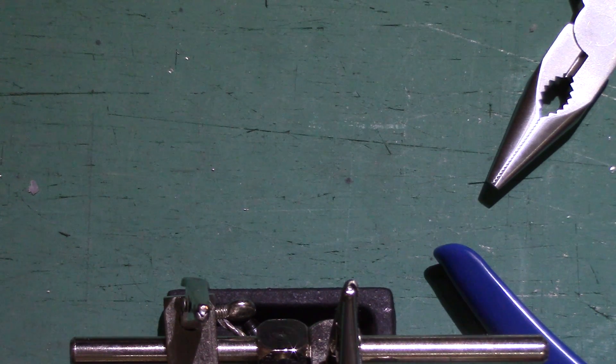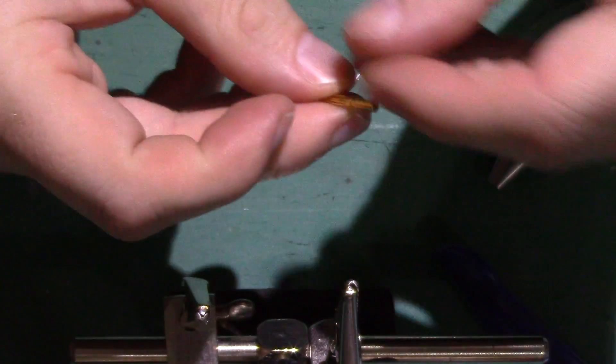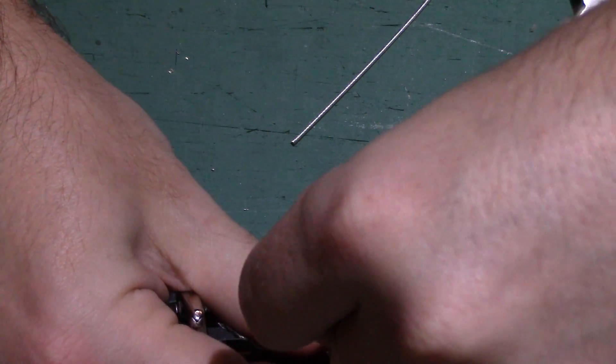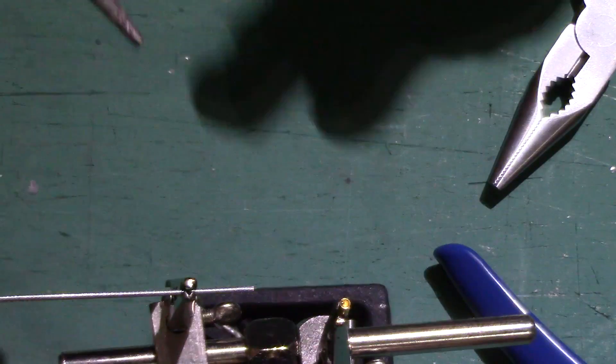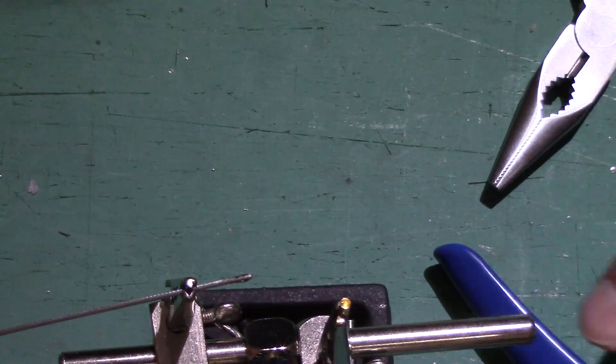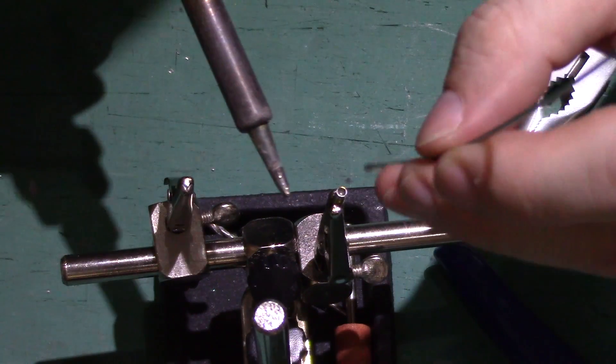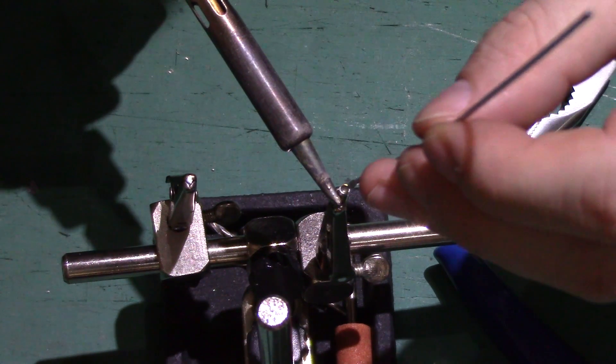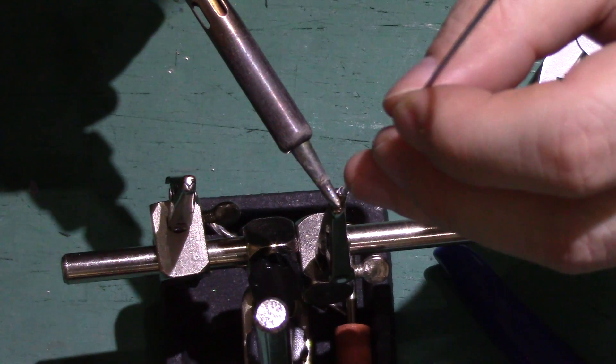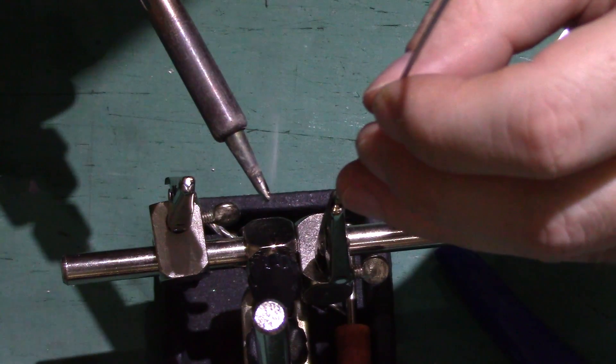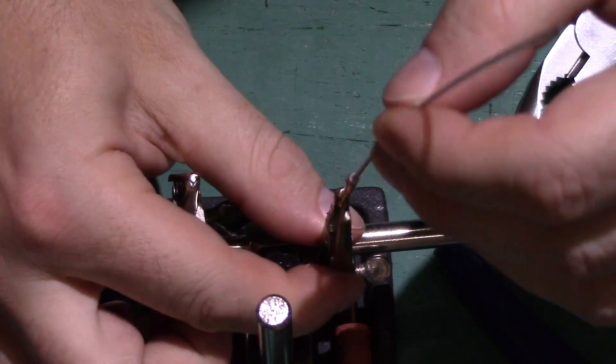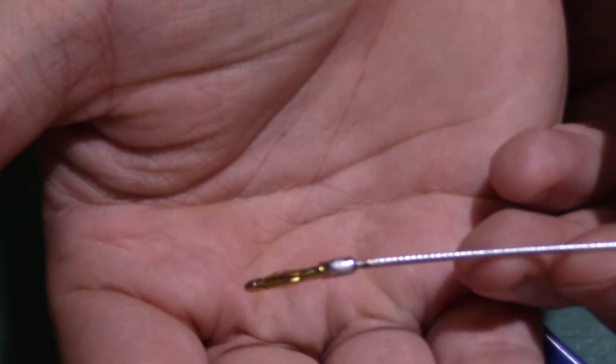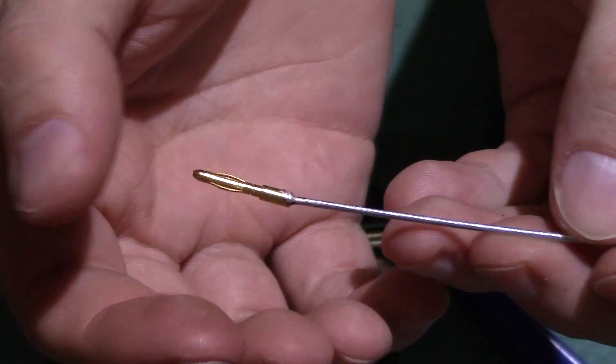The final thing we need to do solder-wise is get the wire itself into the end of the bullet. I'm going to put the bullet connector into my little helping hands here, and also put the end of the wire in there so we can tin the wire. Then it's just a case of filling and putting the wire into the connector. Not the neatest of jobs, but I now have a bullet connector with my wire coming out of it.